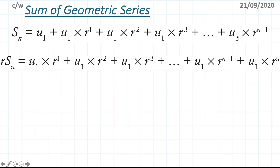The last term: u1 times r to the power of n minus 1, multiplied by r, gives u1 times r to the power of n. So every term in r·Sn has an r factor — this is the new expression for r times the sum.